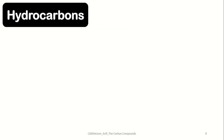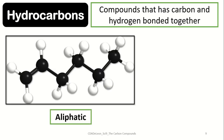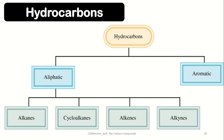Now let us proceed to the different types of carbon compounds, starting with hydrocarbons. Hydrocarbons are compounds that have carbon and hydrogen atoms bonded together. Hydrocarbons can be classified into two: aliphatic or straight chain hydrocarbons, and aromatic hydrocarbons. Aliphatic hydrocarbons can be further classified as alkane, cycloalkane, alkene, or alkyne, depending on the number of bonds present.